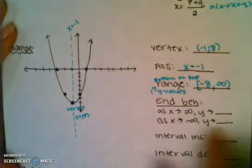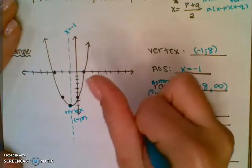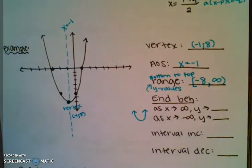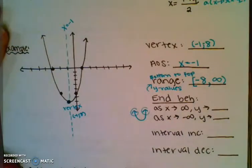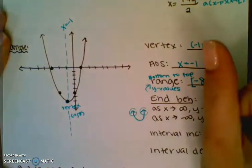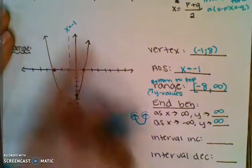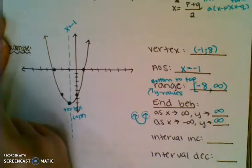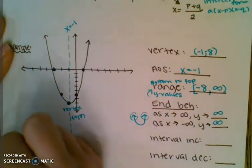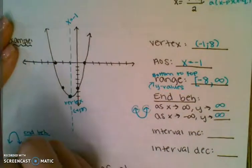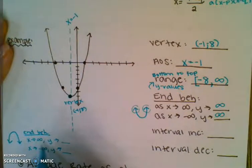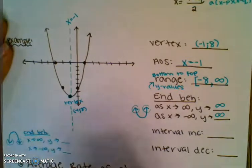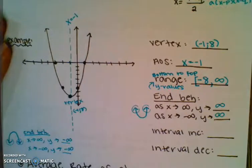Your end behavior literally just looks at your ends. Even if I just gave you a sketch, all you do is look at the ends — here and here. So both those ends, are they going up or down? They're both going up, so they're going to infinity. If they were both going down, then as x approaches infinity y approaches negative infinity, and as x approaches negative infinity y approaches negative infinity — both of them would be negative infinity.